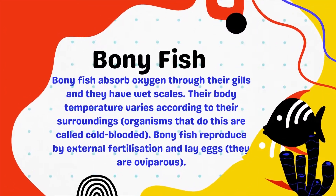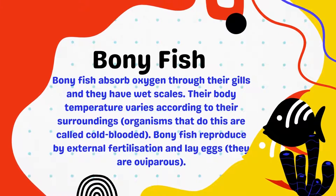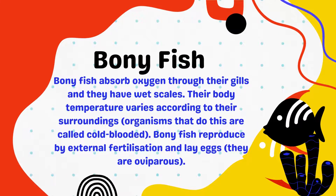Bony fish absorb oxygen through their gills and they have wet scales. Their body temperature varies according to their surroundings. Organisms that do this are called cold-blooded. Bony fish reproduce by external fertilization and lay eggs. They are oviparous.